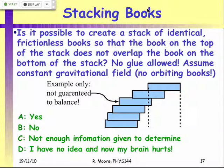This leads to a fun puzzle — a stacking problem. Is it possible to create a stack of identical frictionless books such that the book on top does not overlap the book on the bottom? You're not allowed to use glue, and you're not allowed to have such a high stack that the top book is in freefall out of the Earth's gravitational field — no orbiting books. Can you make a stack where the top book does not lie over the bottom book?